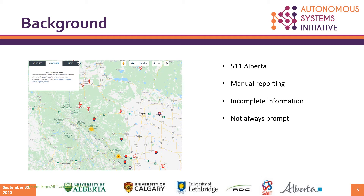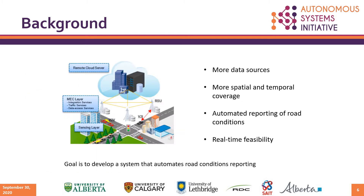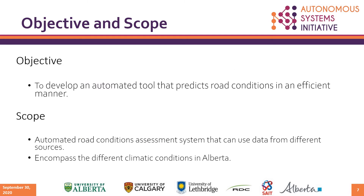This could lead to some problems and incomplete information — it's not always prompt, and maybe not as accurate. It could be helped if we add more data sources with more spatial and temporal coverage. Automated reporting of road conditions would help greatly by reducing human error, increasing accuracy, and enabling real-time feasibility. The goal is to develop a system that automates road conditions reporting, with the objective to develop an automated tool that predicts road conditions efficiently. The scope is to develop a system that can use data from different sources and encompass the different climatic conditions in Alberta.